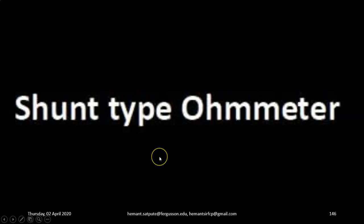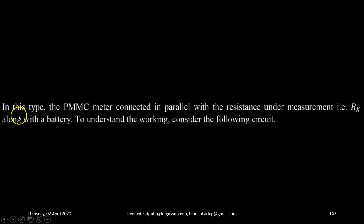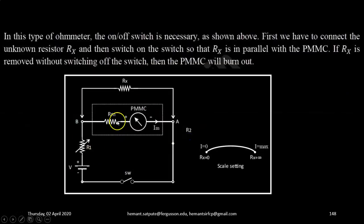Now let's quickly discuss shunt type ohmmeter. In this type, the permanent magnet moving coil meter connected in parallel with the resistance under measurement, that is Rx along with a battery. To understand the working, consider the following circuit. So unknown resistance Rx is connected in parallel with the meter.